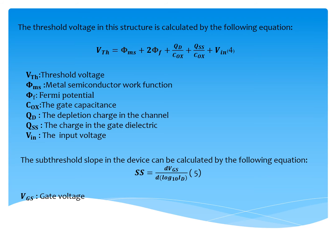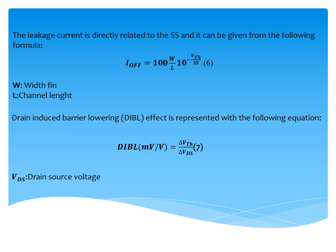The subthreshold slope in the device can be calculated by the following equation: SS equals the variation of the gate voltage per decade of drain current. The leakage current is directly related to the SS and can be given by the following formula, where W is the fin width and L is the channel length. The drain-induced barrier lowering (DIBL) effect is represented by the following equation: DIBL in millivolts per volt equals the variation of the threshold voltage per the drain-source voltage.